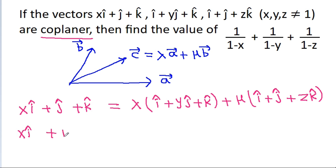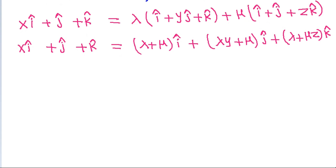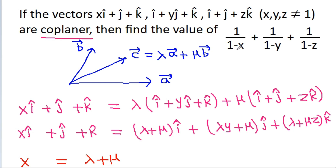Expanding: x·i-cap + j-cap + k-cap equals (lambda + mu)·i-cap + (lambda·y + mu)·j-cap + (lambda + mu·g)·k-cap. Comparing i-cap components: x = lambda + mu. Comparing j-cap components: 1 = lambda·y + mu. Comparing k-cap components: 1 = lambda + mu·g. We need to find 1/(1−x) + 1/(1−y) + 1/(1−g).